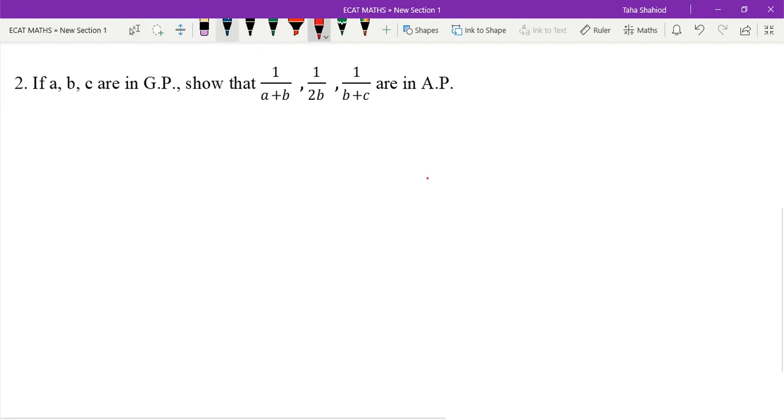We are talking about this question: if A, B, C are in GP, show that the given condition holds. That condition is always given. Since A, B, C are in GP...